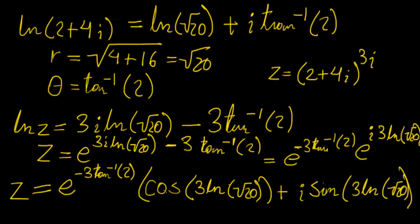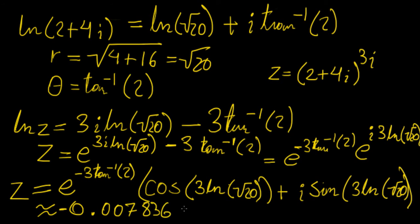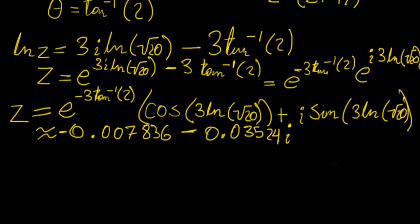We can approximate this: it gives approximately −0.007836 − 0.03524i. That's basically to show you some of the techniques you can apply with complex numbers by using the fact that you can represent them in polar form using exponentials.